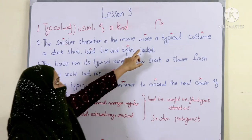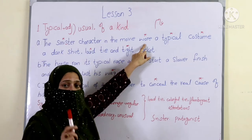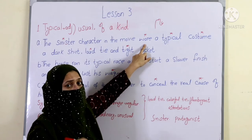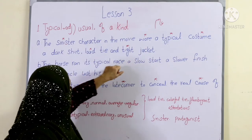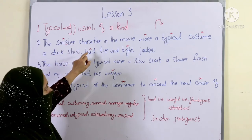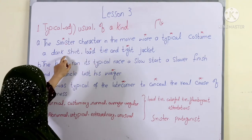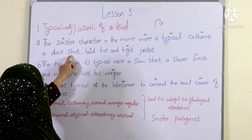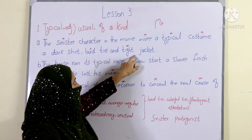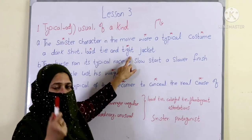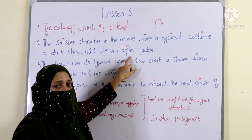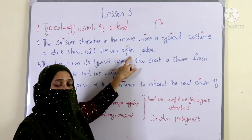Here I am going to tell you: 'wore' is the second form of 'wear.' In the movie, the sinister character was wearing a typical dress which consisted of a dark shirt, a colourful tie, and a tight jacket. The antonym of 'tight' is 'loose jacket' or 'shaggy,' which we call a baggy jacket.